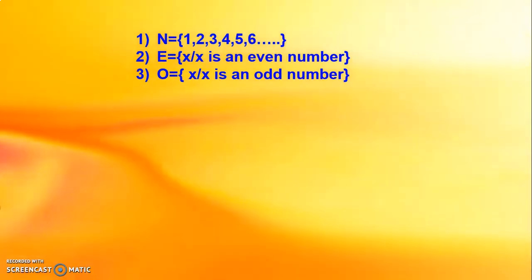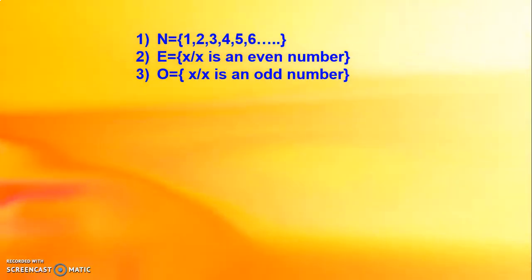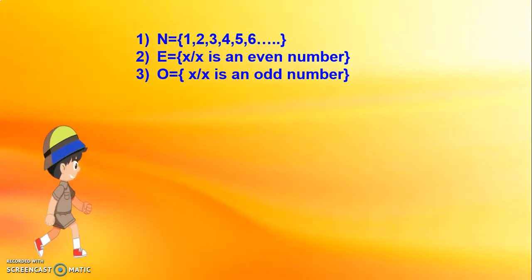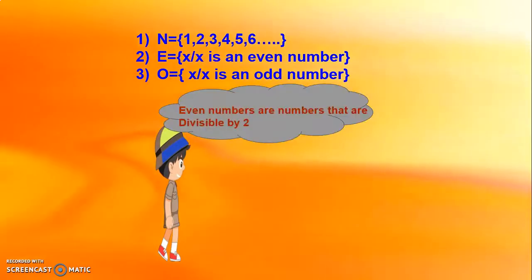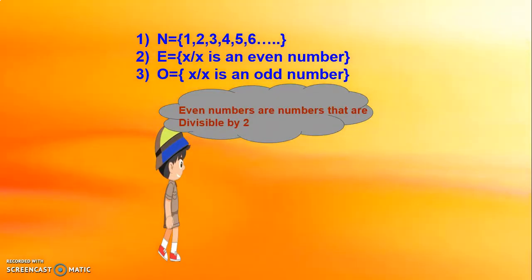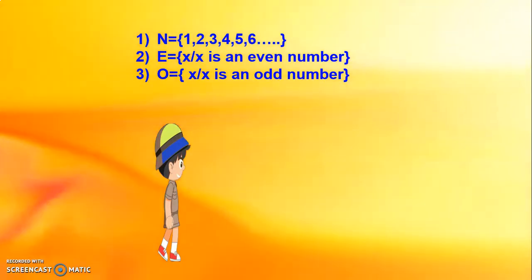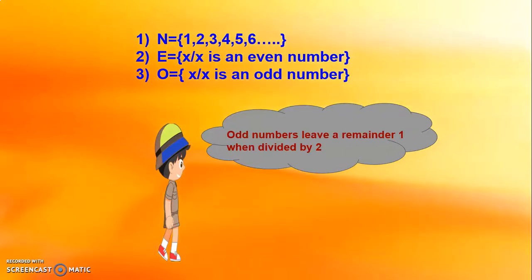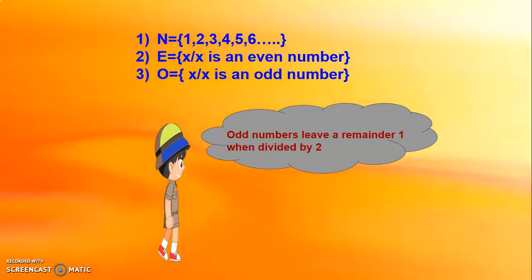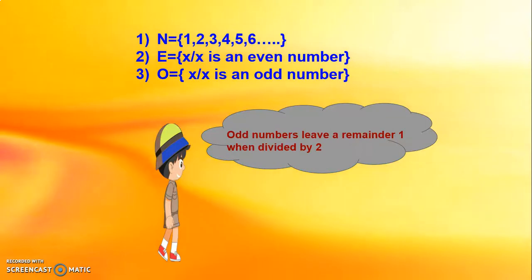What are these even numbers and odd numbers? The even numbers are numbers that are divisible by 2, and odd numbers leave a remainder of 1 when divided by 2. Let us write these two sets in roster form.